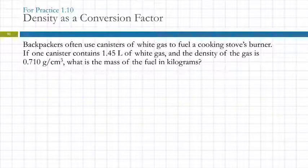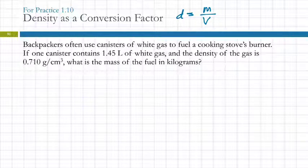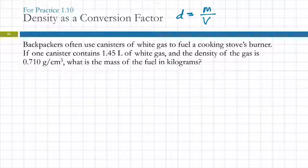Let's do a problem using density as a conversion factor. There is a density equation: density equals mass divided by volume. If you are calculating the density, you have to use the equation. If you're given the density and asked to find either the mass or the volume, you can use the equation. But students do some crazy things because that equation has fractions in it and they mess up a lot. I think it's a lot easier and requires less thinking to use density as a conversion factor. So let's see how we could do that.